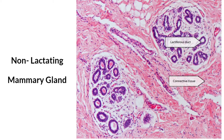Each mammary gland consists of numerous lobes separated from each other by dense connective tissue and adipose tissue. Each lobe contains lobules composed of compound alveolar glands and connective tissue. Inactive mammary glands are composed mostly of ducts.